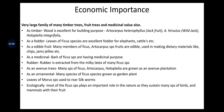As edible fruit, many members of Ficus and Artocarpus species bear edible fruits used in making dietary materials like chips, jams, and jellies. As medicine, bark of Ficus species has medicinal properties. Rubber is extracted from the milky latex of Ficus species. Many species like Ficus, Artocarpus, and Holoptelea are grown as avenue plantations. As ornamentals, many Ficus species are grown as garden plants. Leaves of Morus species are used to rear silkworms.